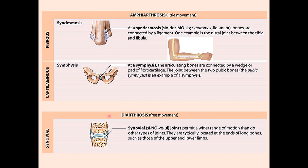The third type of joint based on mobility is diarthrosis, which allows a great deal of movement. These are called synovial joints and are primarily made of hyaline cartilage at the end of each bone. They are enclosed by a capsule. Diarthrosis will be discussed in much more detail.